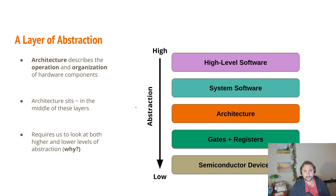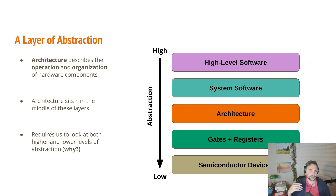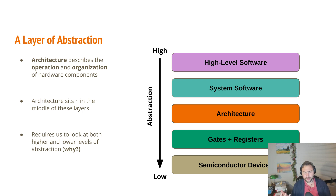At the end of the day, architecture is really just another layer of abstraction in our many layers of abstraction in computing systems. Architecture is roughly in the middle of these layers. At the high level, we have things like our high-level software — the code we write in Python or C++. We write this code without having to think too much about how it's going to run on the underlying hardware, though it's often useful to do so for the sake of performance.